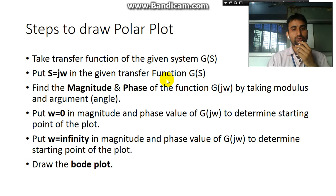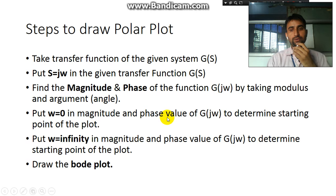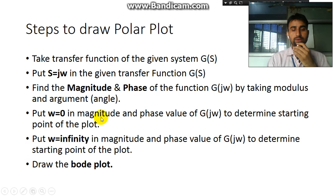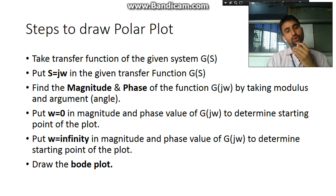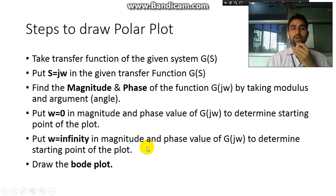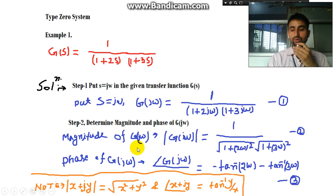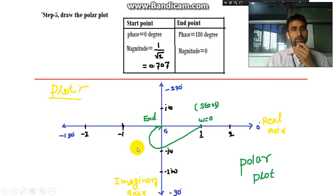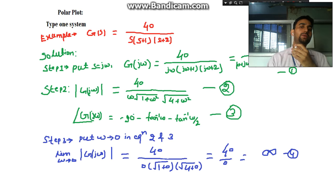The fourth step was to put ω tending to zero — that means ω equal to zero — and find the magnitude and phase to determine the starting point of the plot. Then we put ω equal to infinity in the magnitude and phase to determine where the plot ends, and then draw the polar plot. Today we'll look at a Type 1 system.